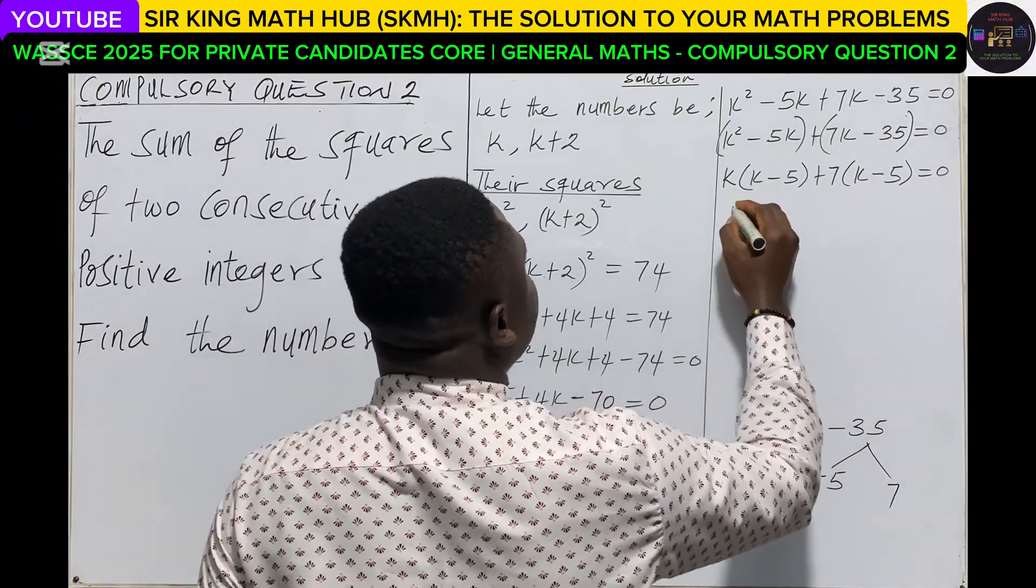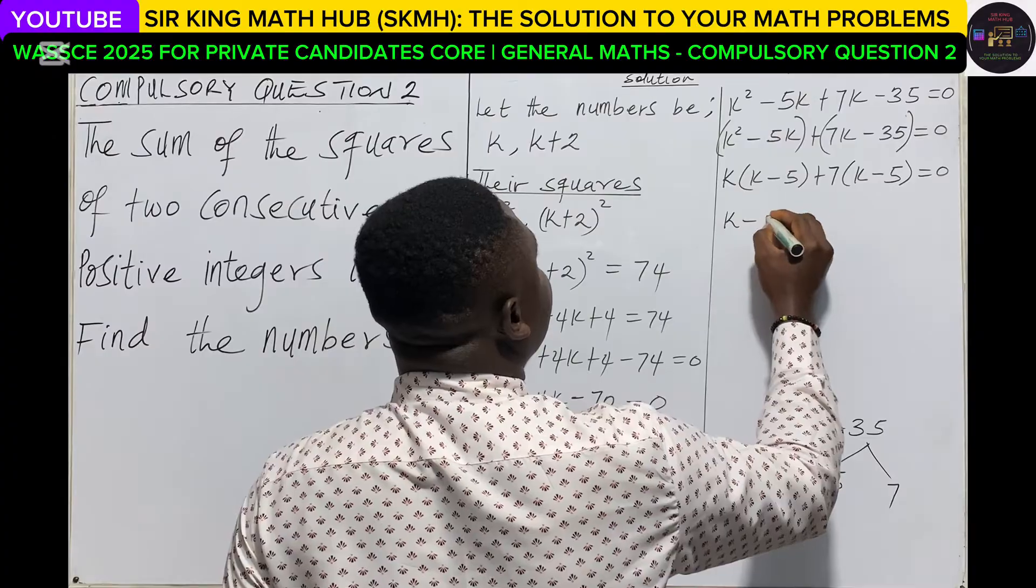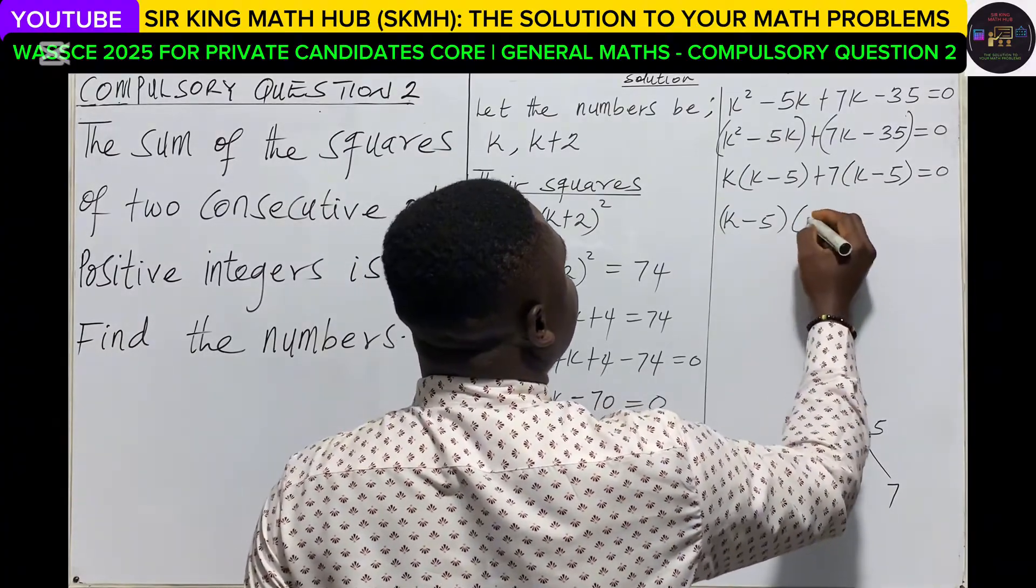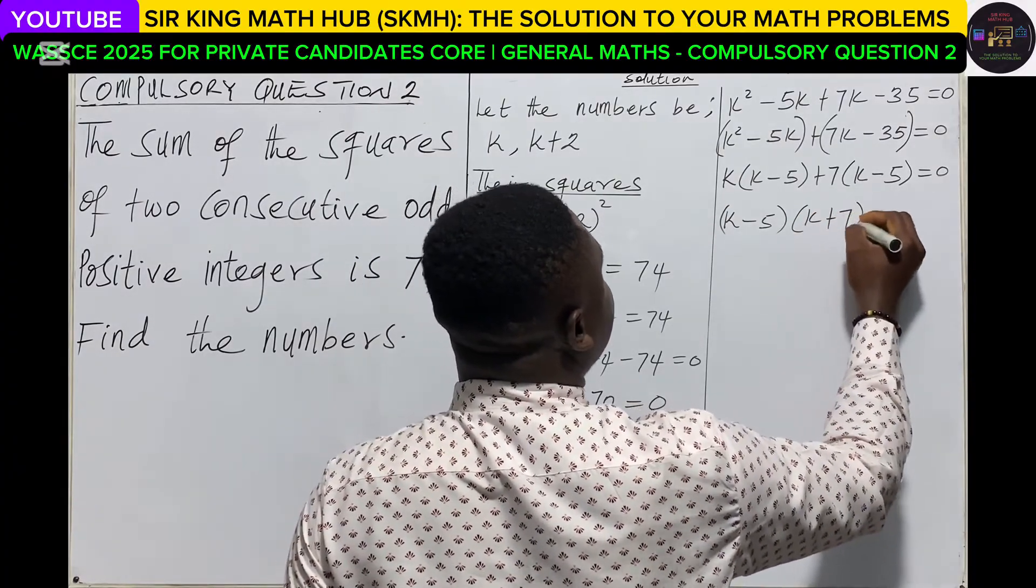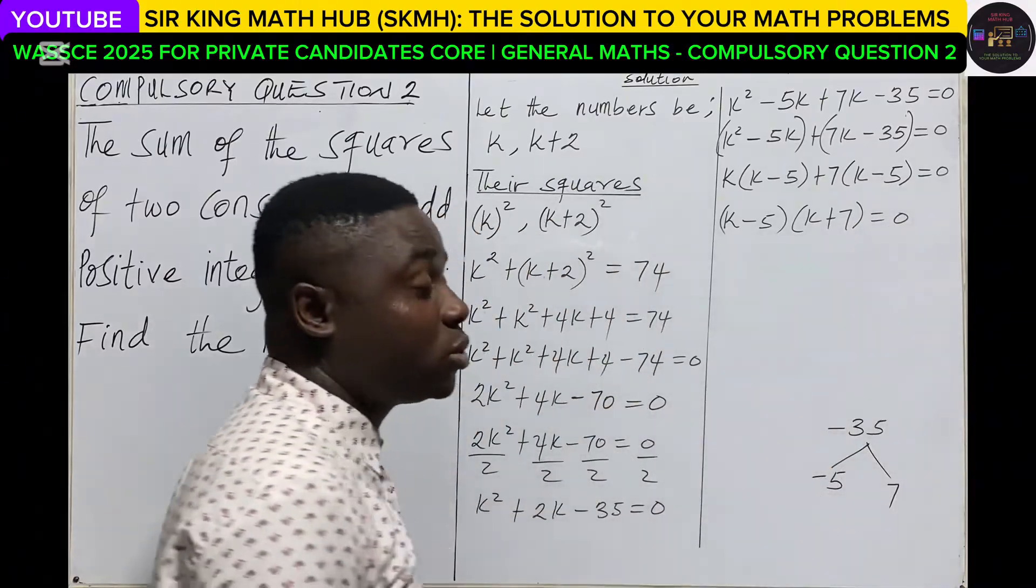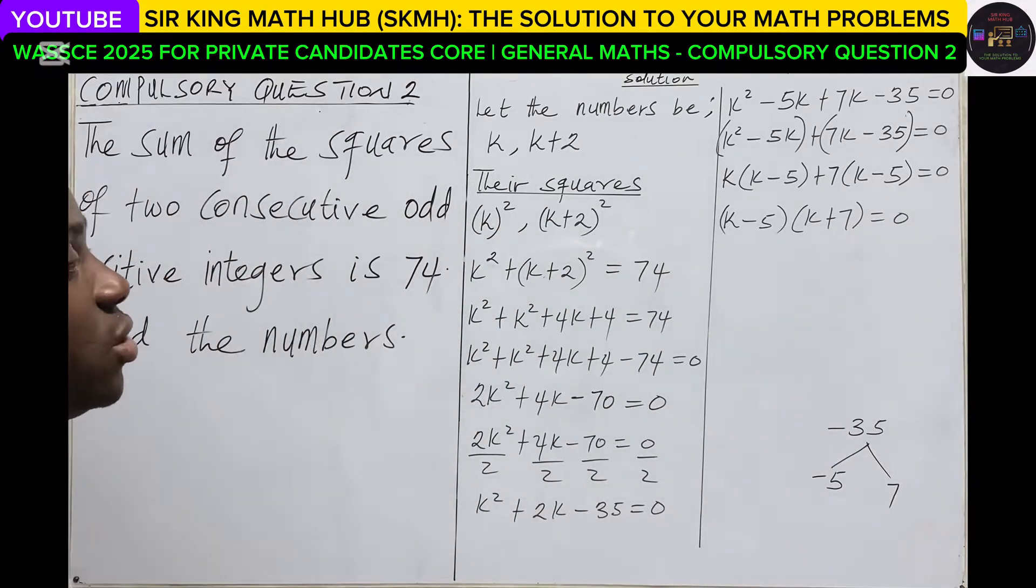So we have k minus 5, so you write one of them, and for the outside factors we have k plus 7, that must be equal to zero. So now I'm going to pick each factor equal to zero and solve for k.